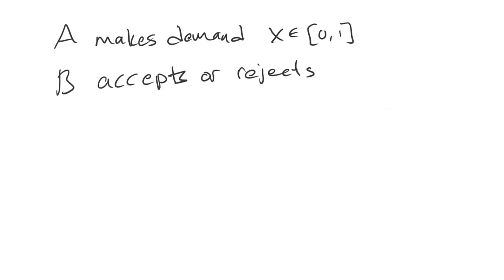The difference is going to be in the payoffs. So if we have an accepted demand, then A's payoff is going to be X, and B's payoff is going to be 1 minus X.